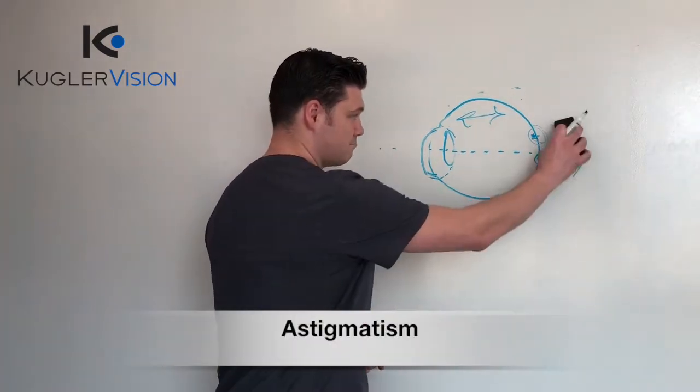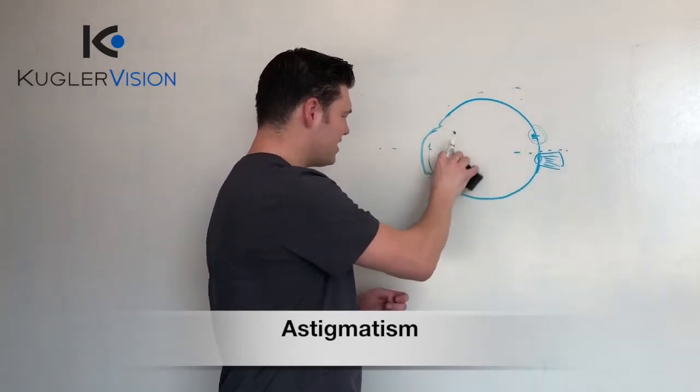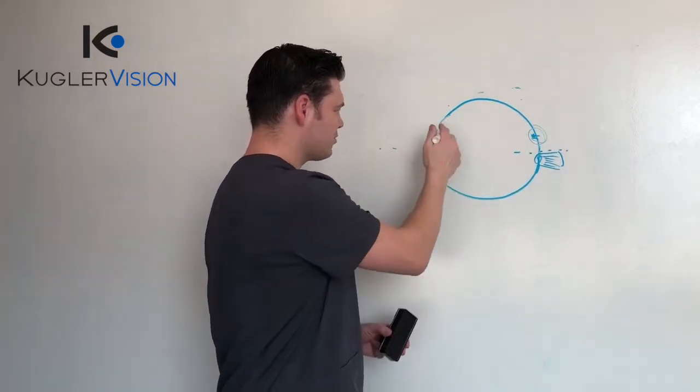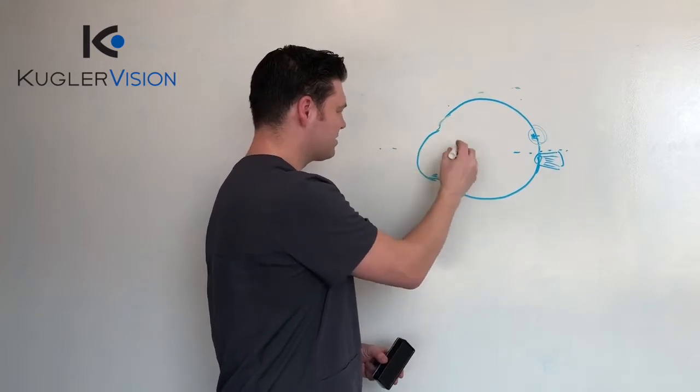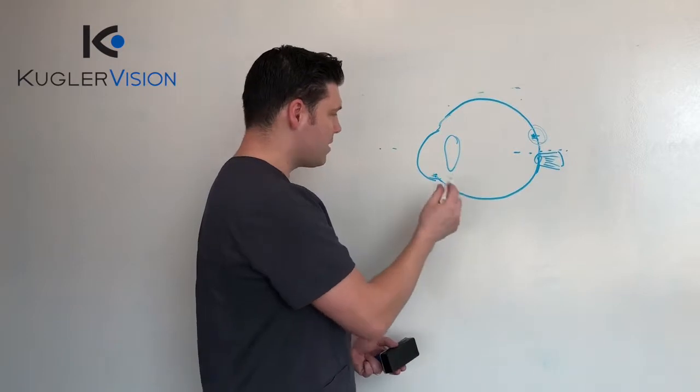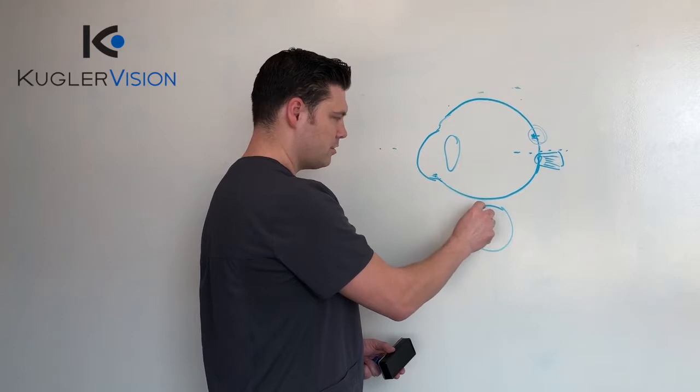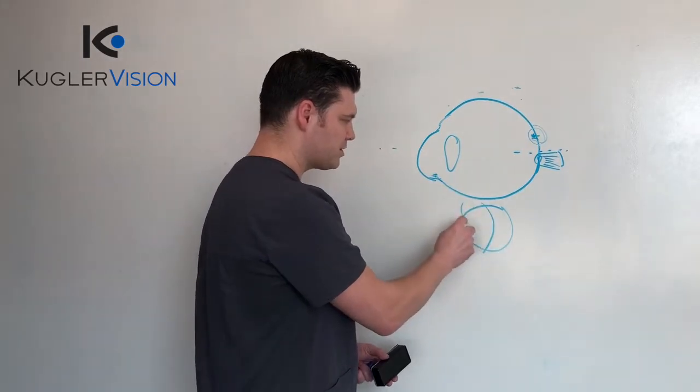With astigmatism, many people are used to hearing their ophthalmologist or optometrist explain to them that their eye is shaped like a football. What we mean by that is that the eye is a different curvature in one meridian than it is another.